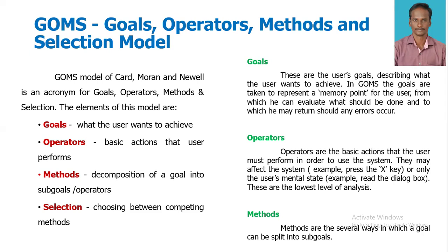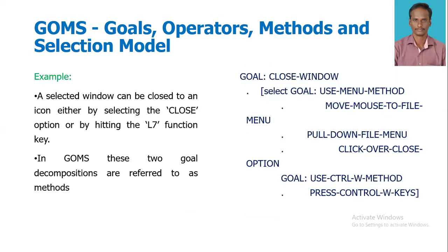Goals describe what the user wants to achieve. In GOMS, goals represent memory points for the user from which they can evaluate what should be done, and to which they may return if any error occurs. Operators are the basic actions the user must perform to use the system; they may affect the system or only the user's mental state, and are the lowest level of analysis. Methods are the several ways in which a goal can be split into sub-goals.